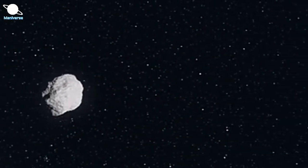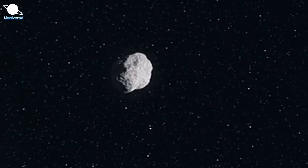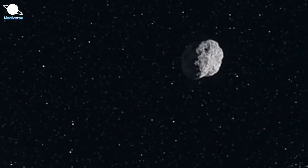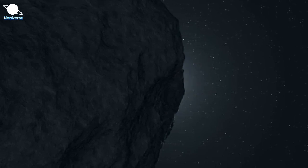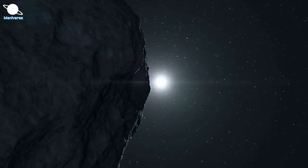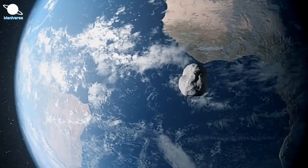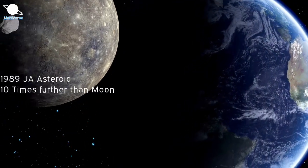But the main question is, are we safe from 1989 JA? Near the end of May, asteroid 1989 JA will come within 2.5 million miles of Earth. How close is it? Indeed, it's very close. Just over 10 times further away than the distance of the Moon from Earth.